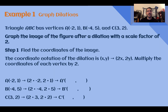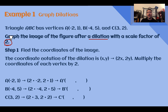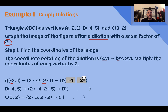Example 1 — Graph Dilations. Triangle ABC has vertices (-2, 1), (-4, 5), and (3, 2). Graph the image after a dilation with a scale factor of 2. Since the scale factor is greater than 1, the dilation is an enlargement. Multiplying each coordinate by 2: (-2, 1) becomes (-4, 2); (-4, 5) becomes (-8, 10); and (3, 2) becomes (6, 4).